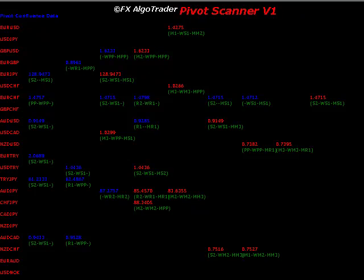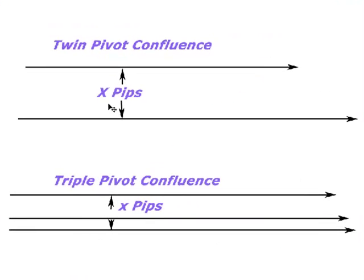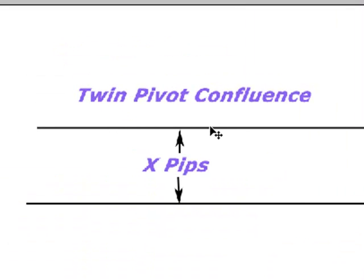By pivot confluences, what we're talking about here is either twin pivot confluences where two pivot levels, either a daily pivot and a monthly pivot, or a monthly pivot and a weekly pivot, or any combination of daily, weekly, or monthly pivots.